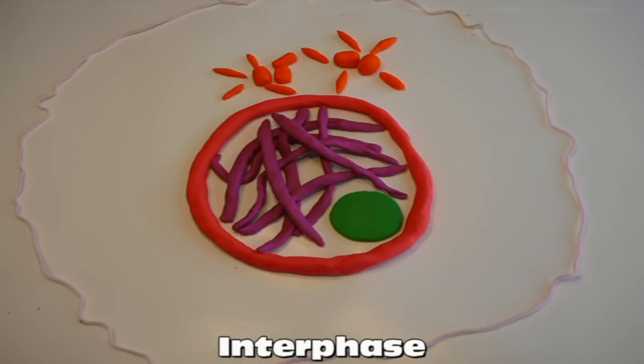At the beginning of mitosis, the cell has gone through interphase. The contents of the cell have doubled. In the cytoplasm, there are now two centrosomes. Inside the nucleus, the chromosomes have duplicated and are packed together loosely as chromatin.